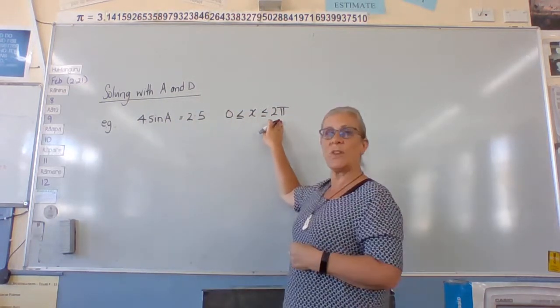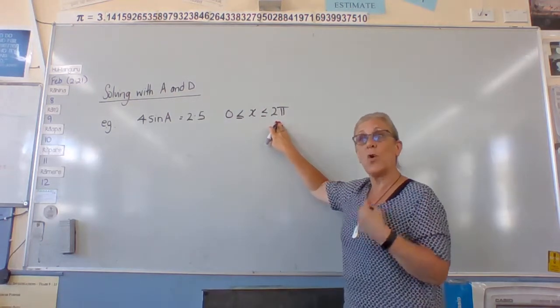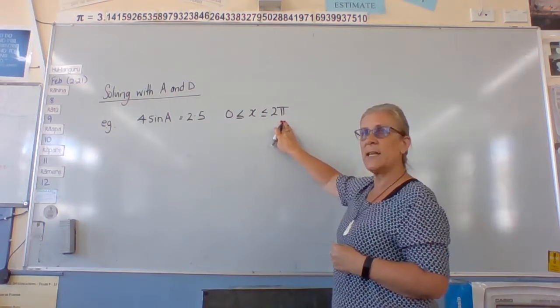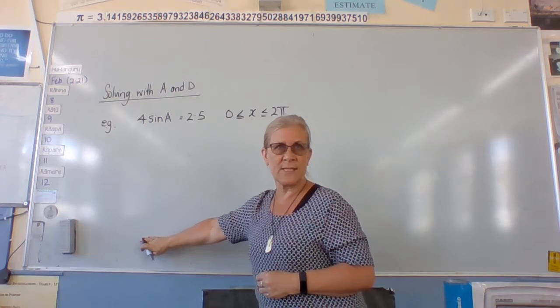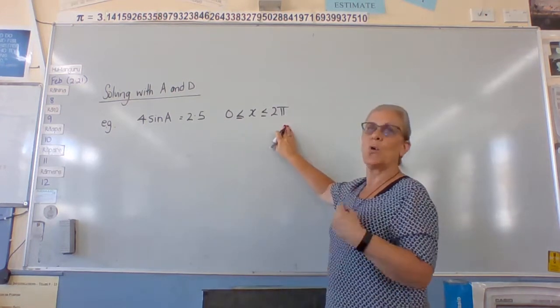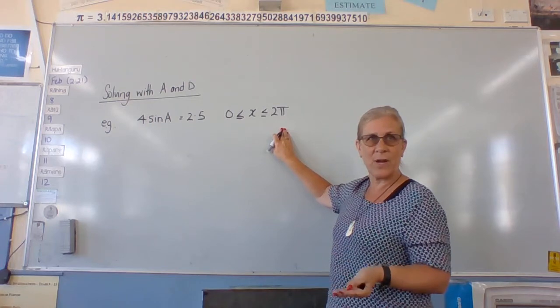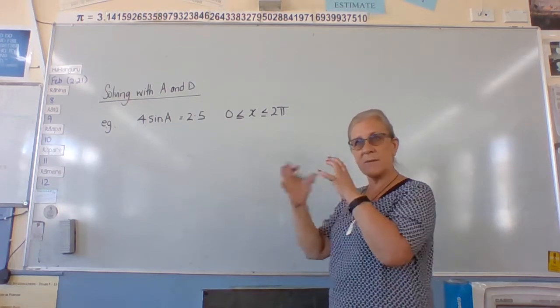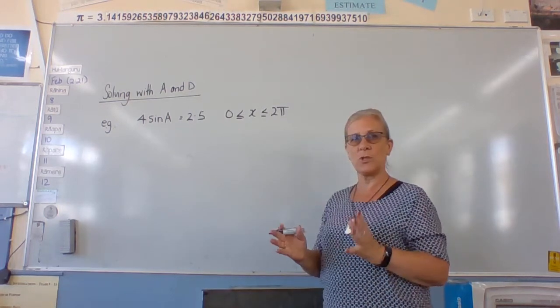The domain will normally tell you whether you're interested in radians or in degrees. So if that says 360, my answers are going to be in degrees. If that says 2 pi or a number like 6, then my answers are going to be in radians. So you've got to watch that part to figure out what you're doing.